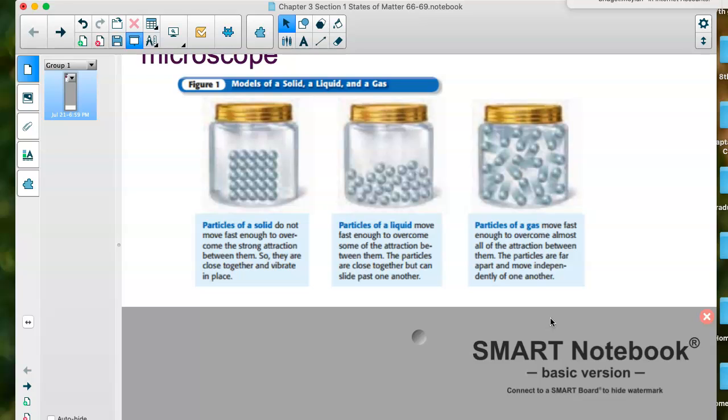So they are very close together, and they vibrate in place. In the middle, those are particles of a liquid. You can see that they're a little bit farther apart, and they still are close, but not quite as close as a solid would be. They move fast enough to overcome some of the attraction between them, and they can kind of slide past one another.